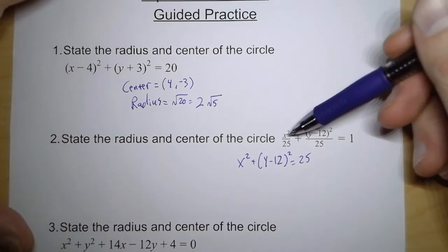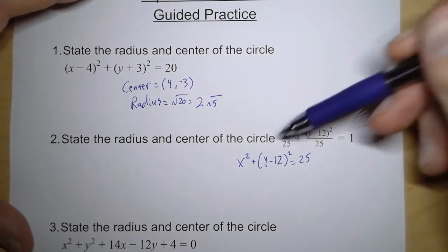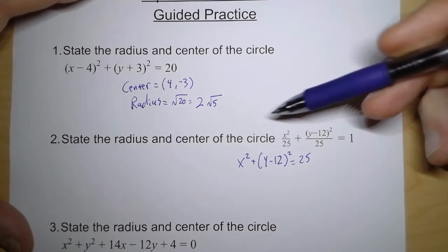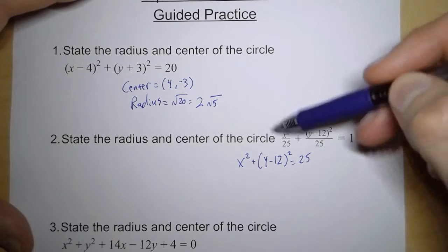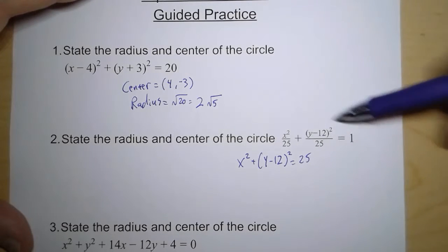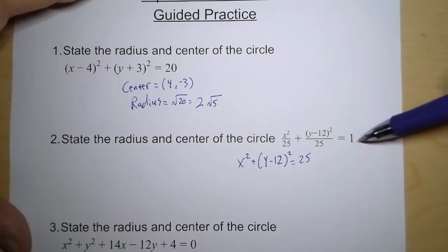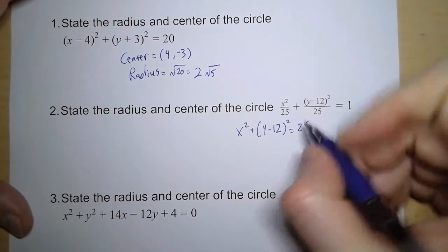So if we multiply 25 by everything, we get x squared plus quantity y minus 12 squared equals 25. Now I'll link to a video that we're getting out from the channel later on that talks about ellipses. But this is the form of a circle, but you'll see that we use this more when we talk about ellipses and other conic sections. So for now, we just use this equation.